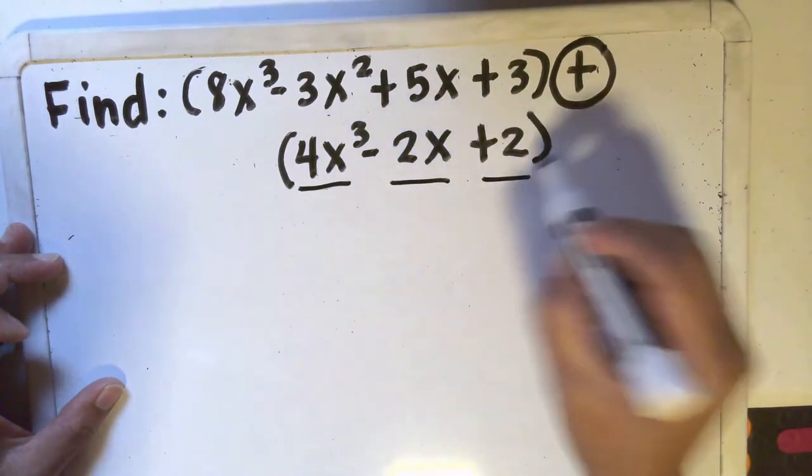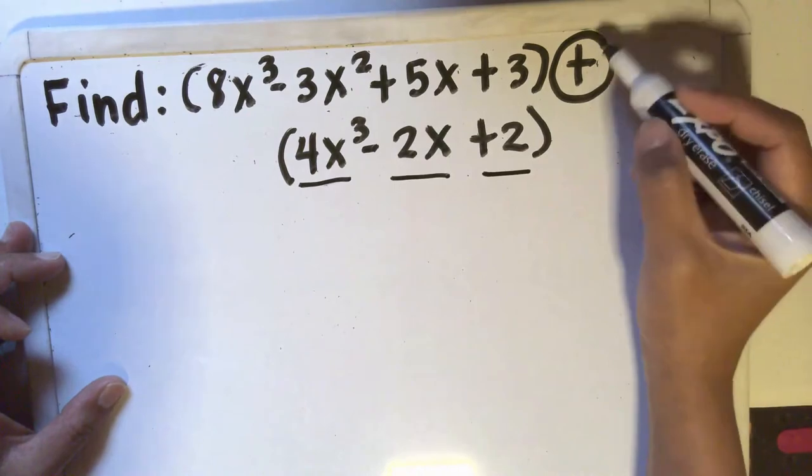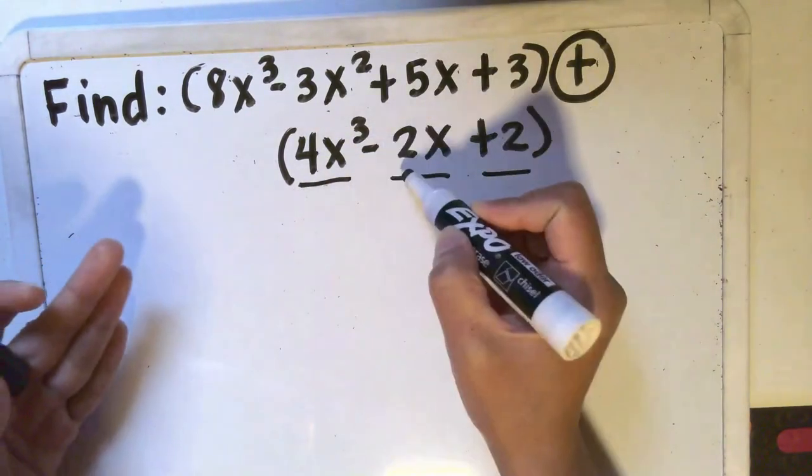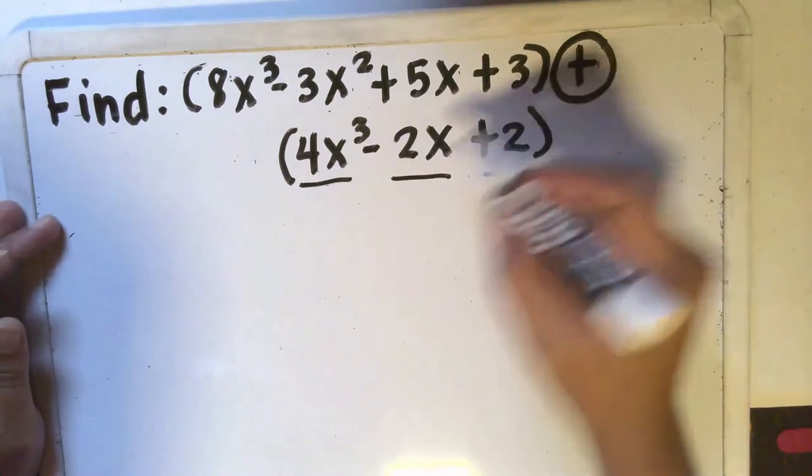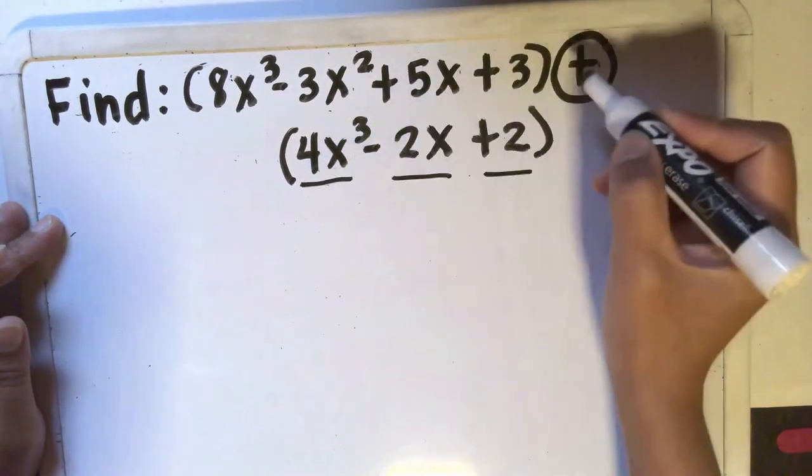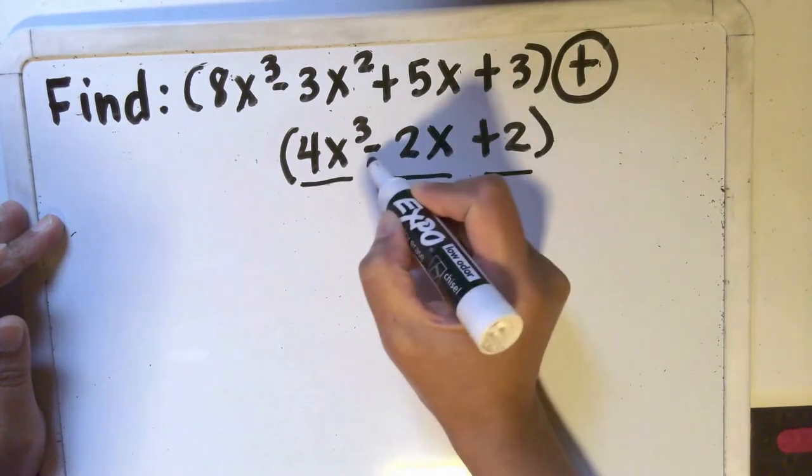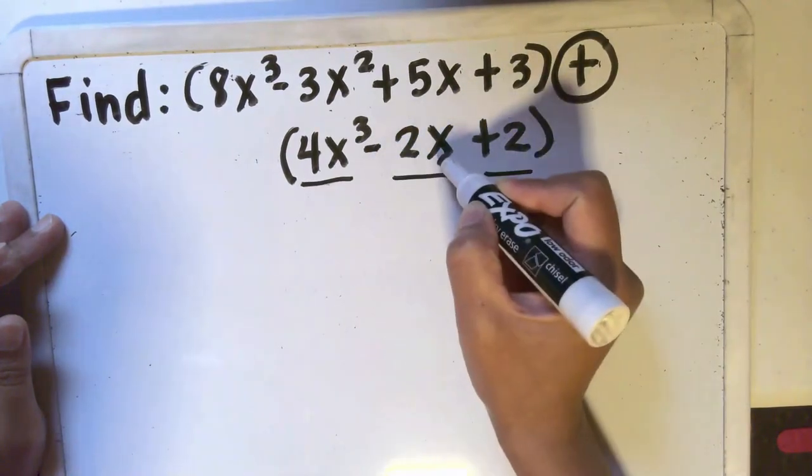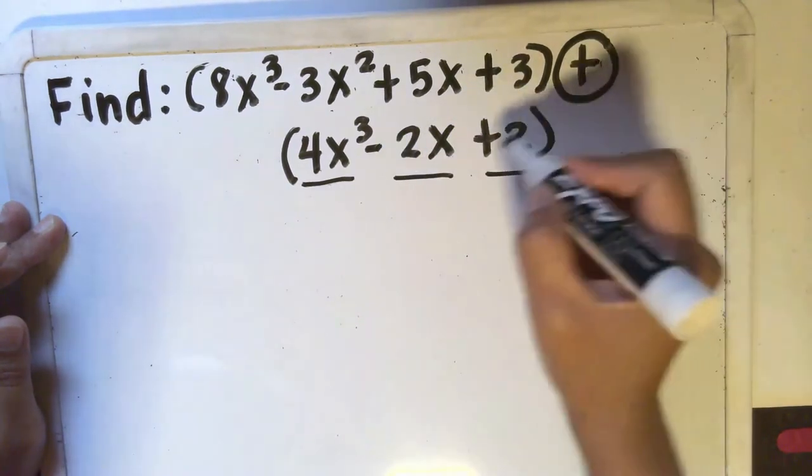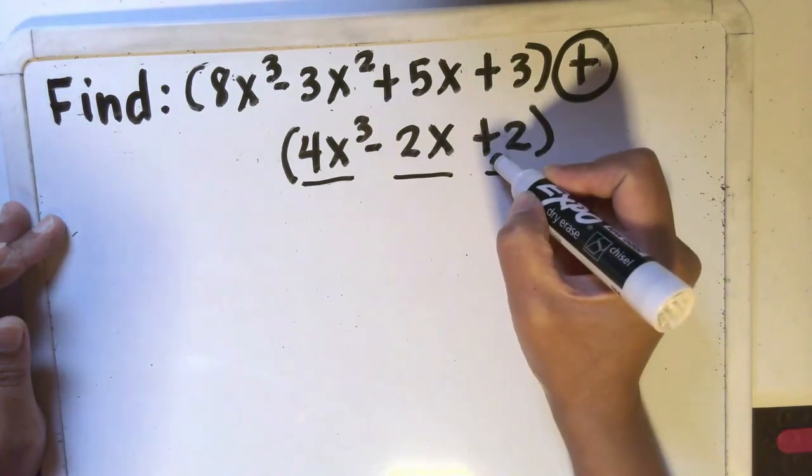When you do that it would be just like multiplying a positive sign to each of these terms. So positive times positive, positive. In this case we're going to take the minus sign as the sign of 2x. Positive times negative is still negative, positive times positive is positive.